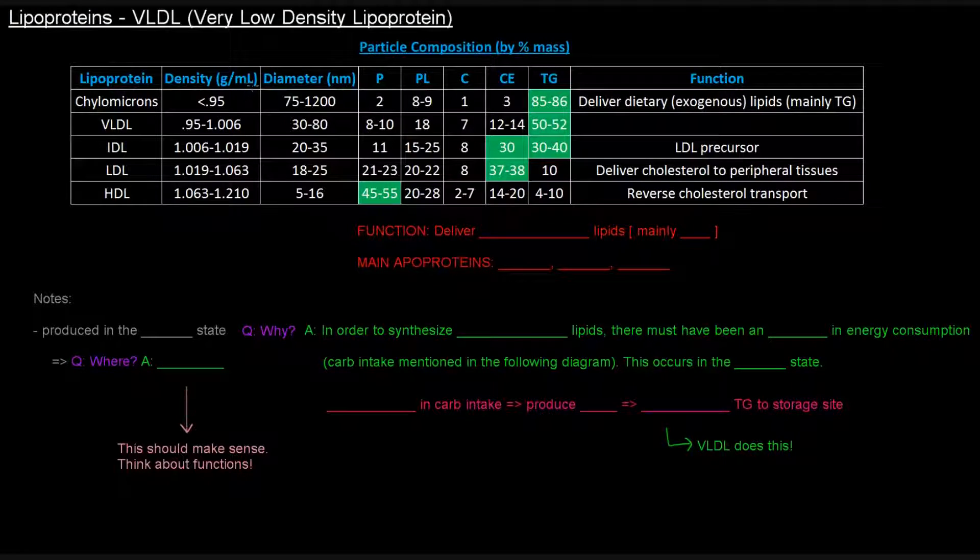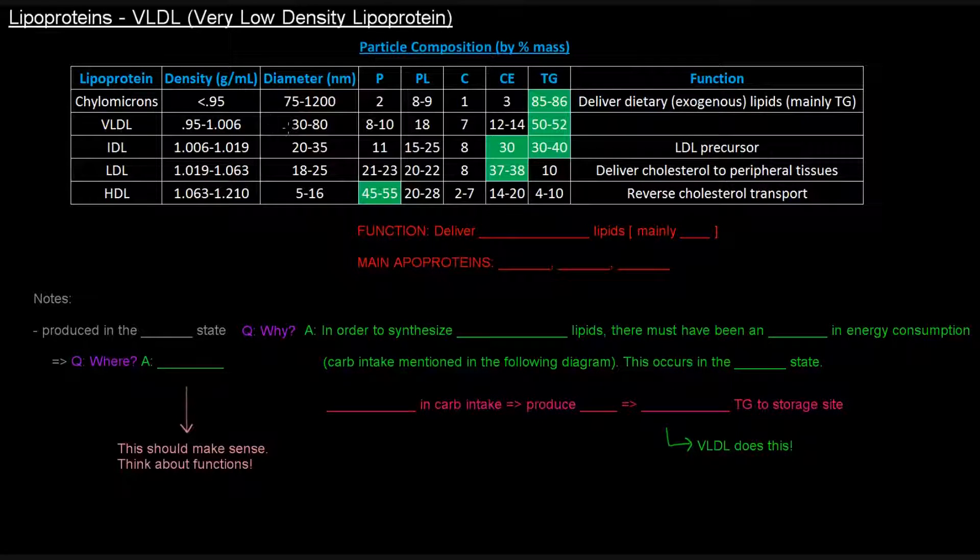So next up is the very low density lipoproteins, VLDLs. They are produced in the fed state, and where they are produced is actually the liver.